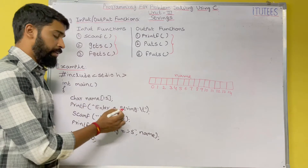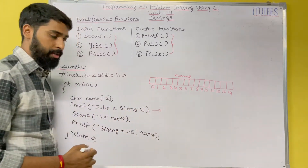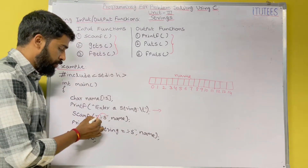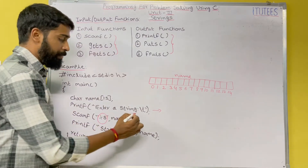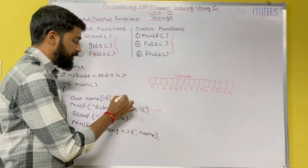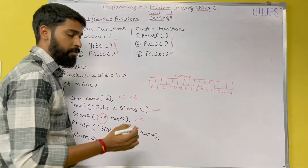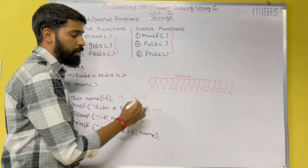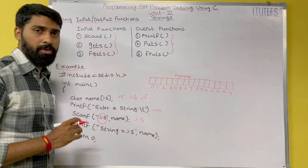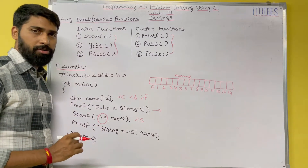So printf — 'enter a string' — this message is displayed on the monitor. In scanf, you are going to use the control string %s. For character you use %c, for integer you use %d, for float you use %f. Similarly, if you want to read a string from the keyboard, then you are going to use %s as a control string.